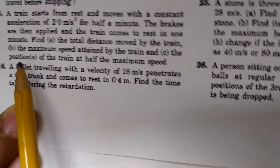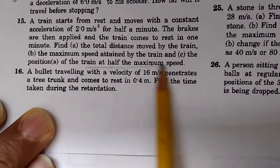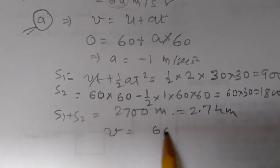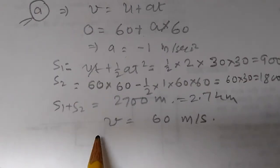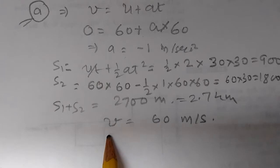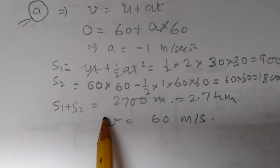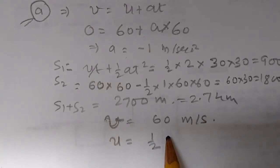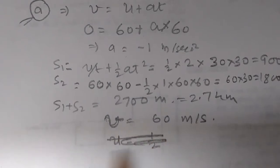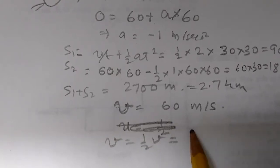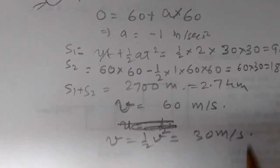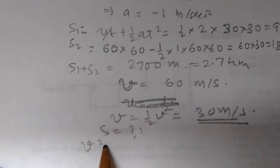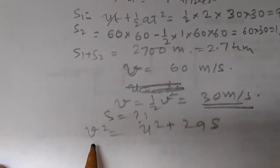Part C: the position of the train at half the maximum speed. The maximum speed is 60 meters per second, so half the maximum speed is 30 meters per second. We need to find the position s when the speed reaches 30 meters per second.